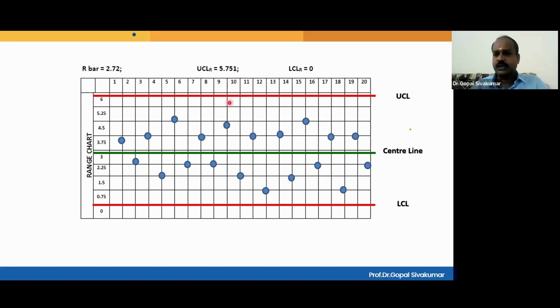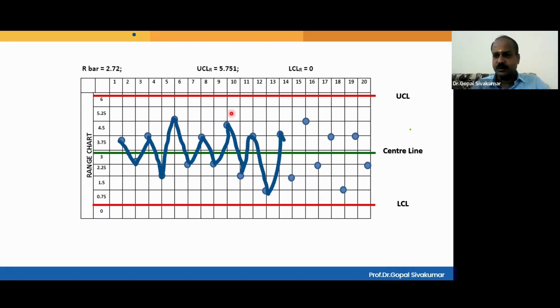All 20 ranges are plotted and all are found to be well within the control limit — that means the range chart is under statistical control. The range is stable, there is not much variation as far as the subgroup range is concerned, meaning the variation within the subgroup is stable. Always in a control chart, we connect the points in the same order of sequence using a straight line — each point connected to the next by a straight line. This is your R chart.